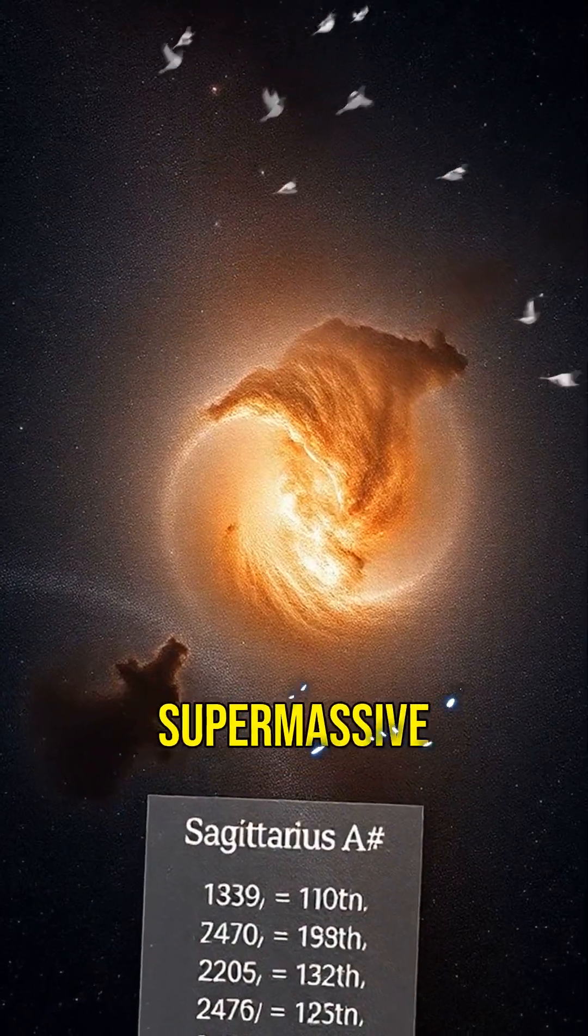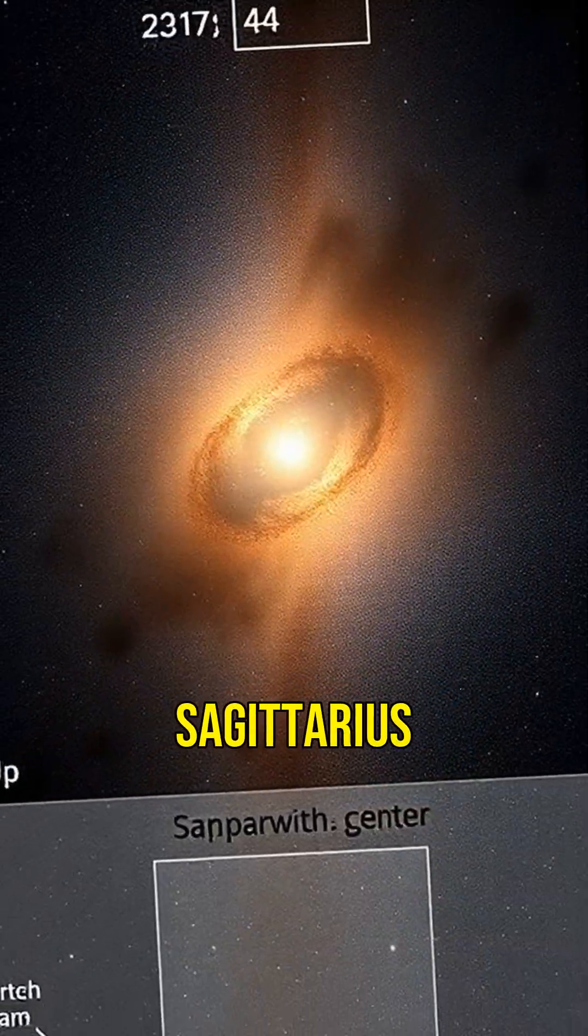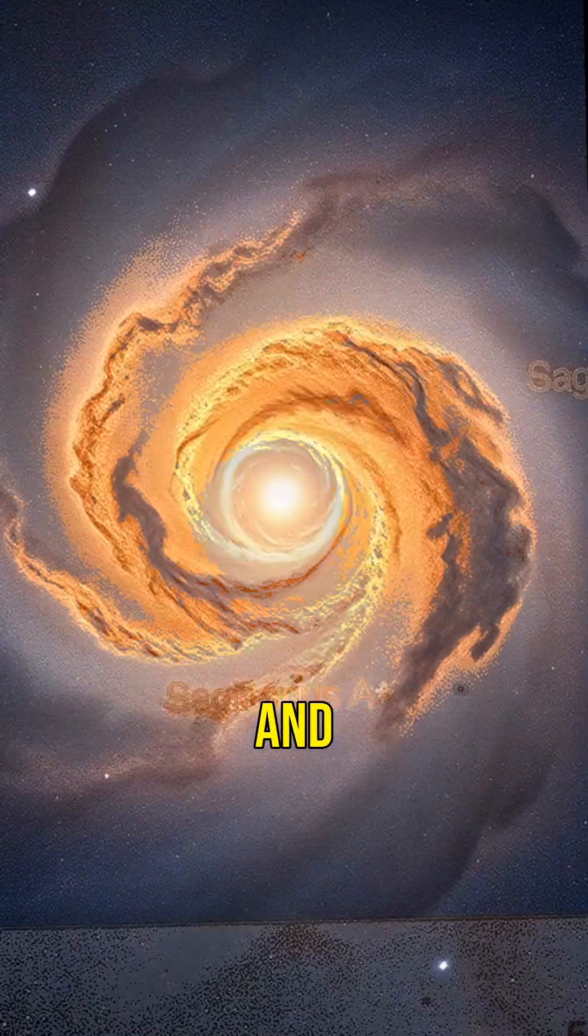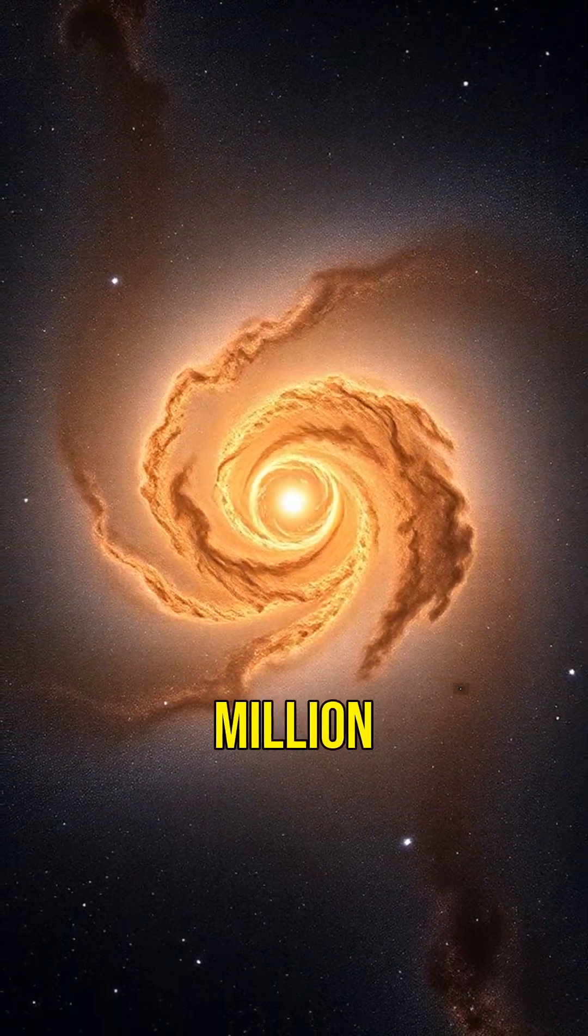Our galaxy's supermassive black hole is called Sagittarius A*. It's about 26,000 light years away from Earth and has a mass equivalent to 4 million suns.